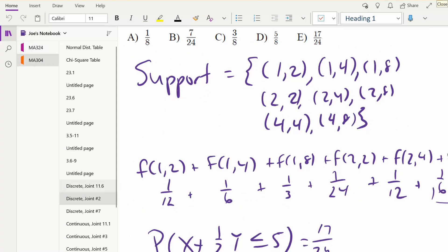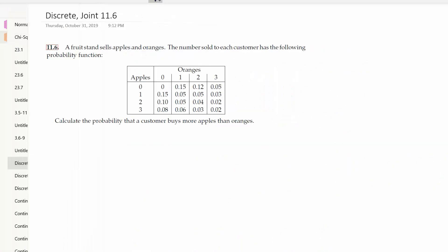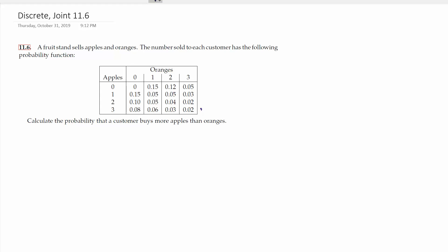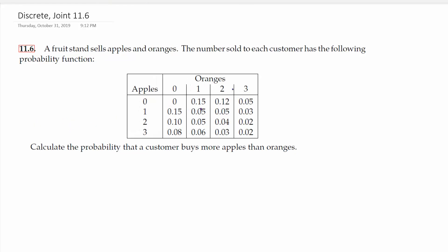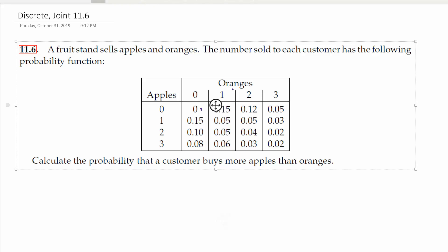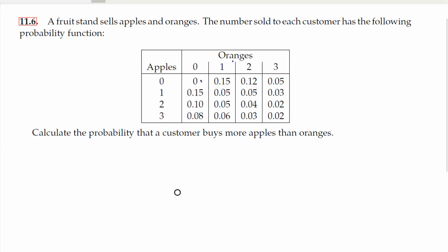Let's do another one. Let's look at this one - rather than giving you an actual explicit function to plug numbers into, they just give you a table with function values and want you to use it. If you were to go through and add up every number in this table, what should you get? One. The problem says buy more apples than oranges, so you can't use the third column at all.